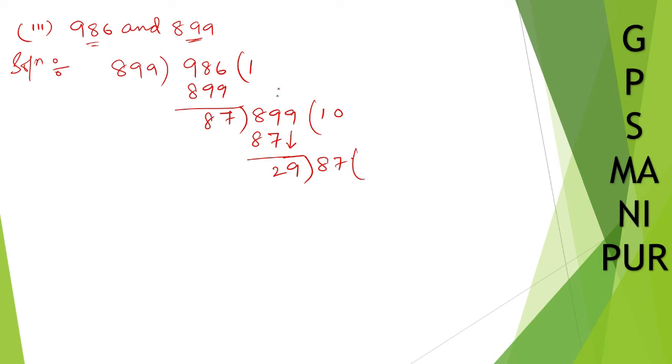Or simply I can write 87, 10, 870 directly. So 29 divided by 87. 29 into 3, 9 to 18, 9 to 27, 2 and 3 to 6, 7, 8, 87. So we got the answer, 29 into 3 is 87, so remainder is 0.